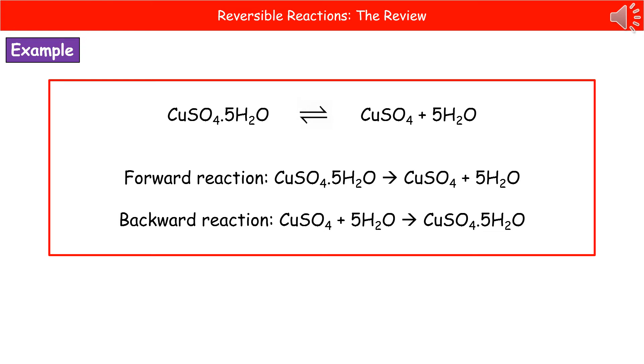Because we've got that reversible reaction sign in the middle, it tells us that this can go in a forward reaction and a backwards reaction. They could ask you to write down the forward and backward reaction equations. So in that case, the forward reaction is the one that goes from the left to the right. And just change that reversible arrow for a standard arrow.